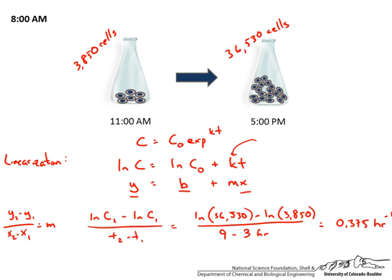So once we know the slope we just go ahead and plug that back into our equation and solve for the natural log of c0. So I will choose the first point, natural log of 3850 and that is going to be the natural log of c0 plus 0.375 hours to the minus 1 times the time which in this case is 3 hours. Doing this solves for c0 equaling 1,250 cells.